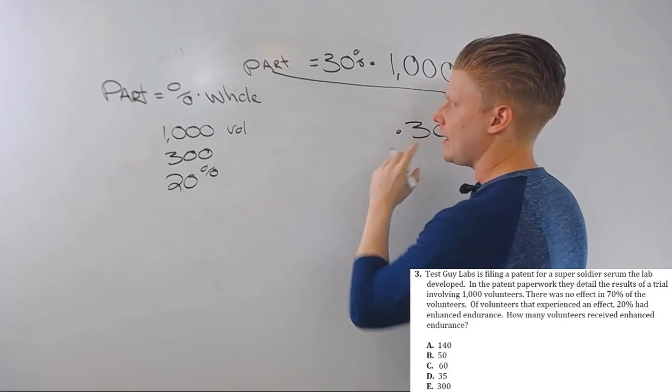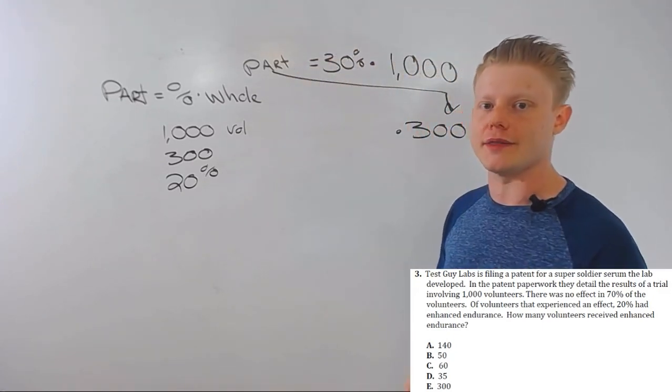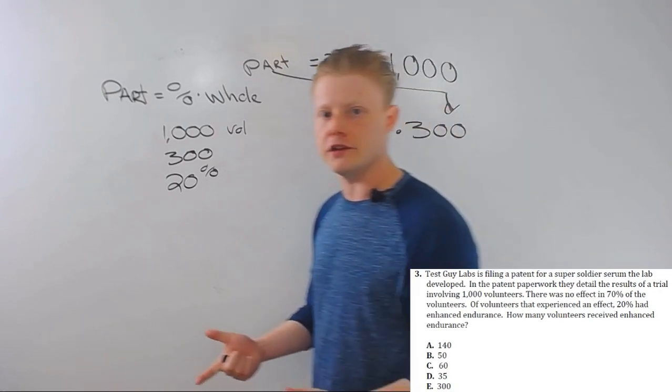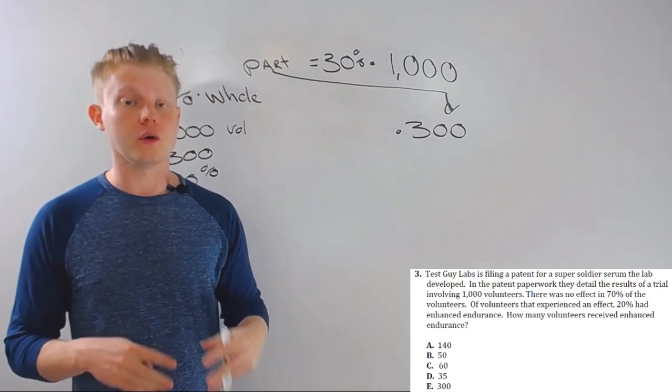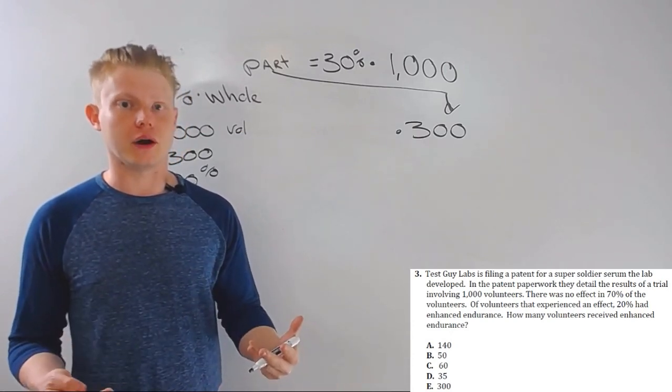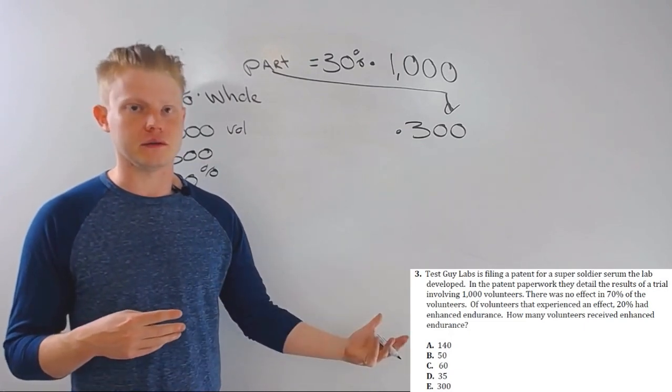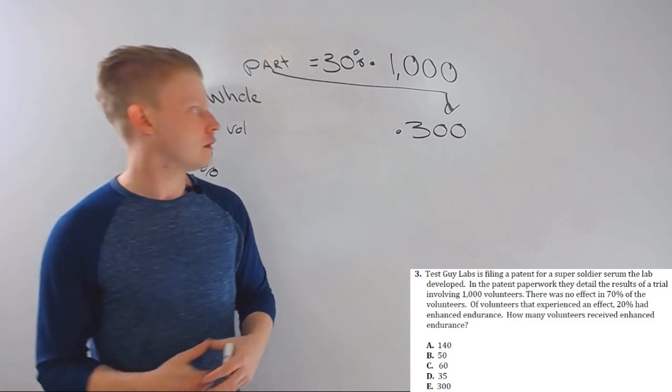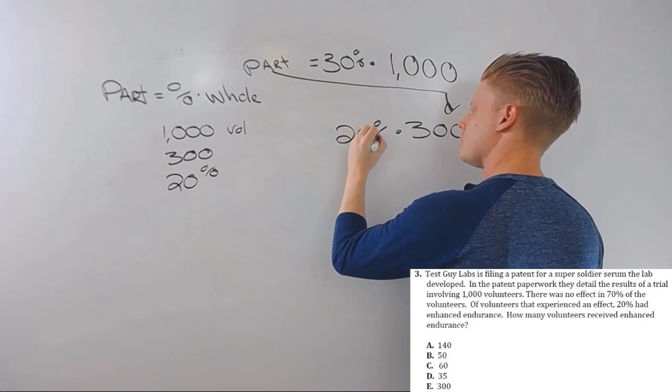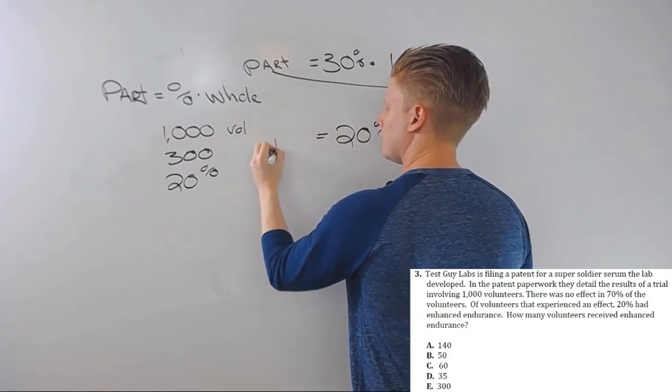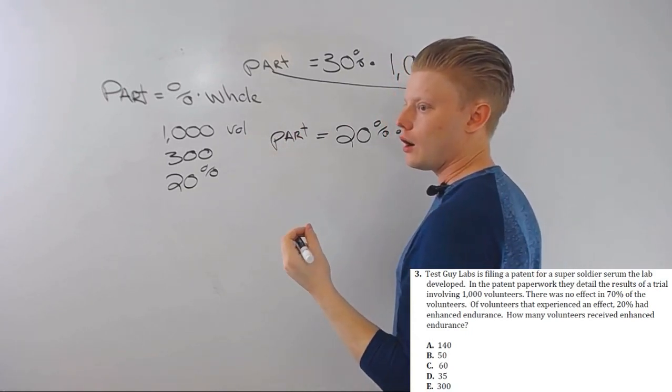Now I don't need to modify this percent because I'm interested in that 20%—I'm interested in the ones that got the endurance. I don't care about the other 80%. In the first step I did because I wanted the obverse, the opposite of what it gave me. They gave me 'didn't have an effect,' I needed 'had an effect.' So I can just multiply this by 20% and find my part. The number of volunteers who had enhanced endurance will equal 60.